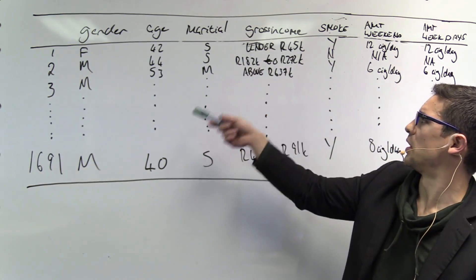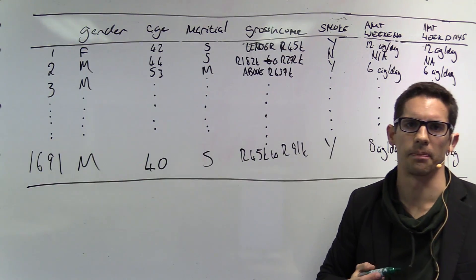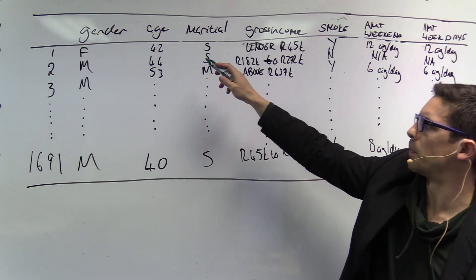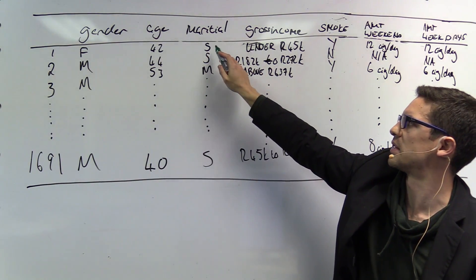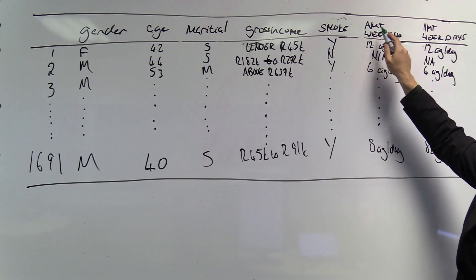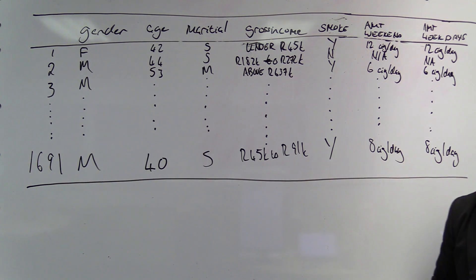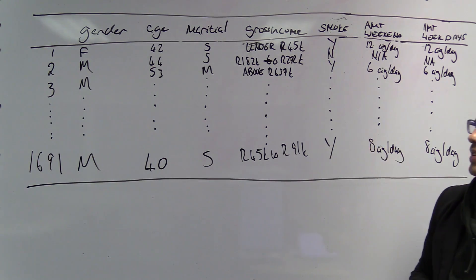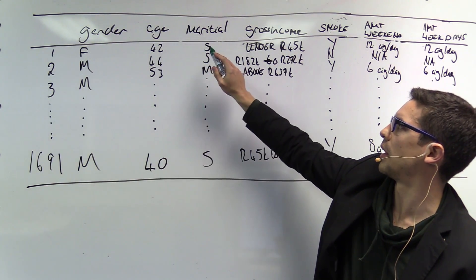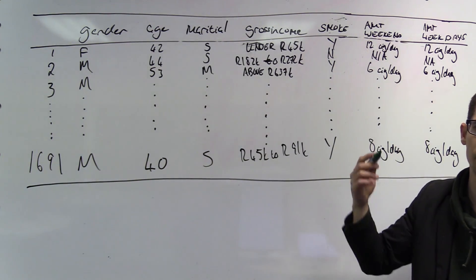Behind me, we've redrawn this table and made it a bit more South African — converting pounds to rand, where K means thousands. So the first row shows a female, age 42, marital status single, gross income under 45,000 rand per year, smoker yes, smoking 12 cigarettes per day on weekends and 12 on weekdays. In the table: M is male, F is female, S is single, M is married, Y is yes, and N is no.